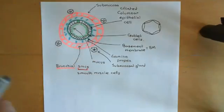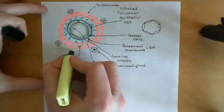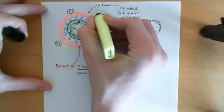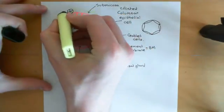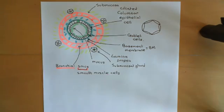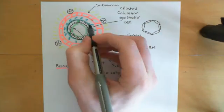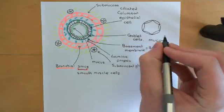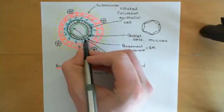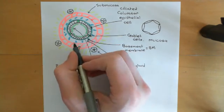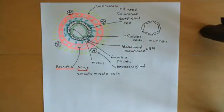The submucosal glands sit amongst the layer of connective tissue which is called the submucosa, because it's underneath the mucosa of the bronchus. The mucosa consists of all of what we've discussed so far: the epithelium with the basement membrane, the lamina propria, and then the layer of smooth muscle cells underneath that.